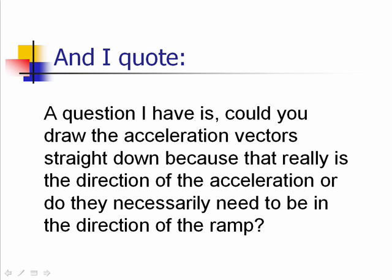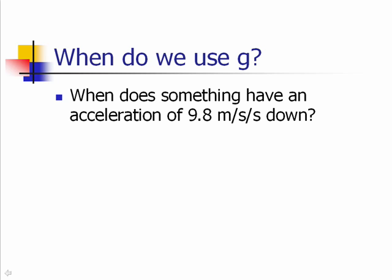So your acceleration is zero if you're sitting in a chair. So when does something have this gravitational acceleration of 9.8 meters per second every second? When do I use this value of little g?